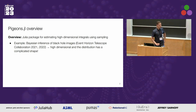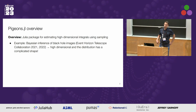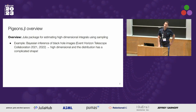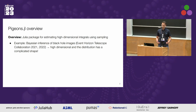Pigeons is a Julia package for estimating high-dimensional integrals using sampling. For instance, Paul Tita, who is here in the audience, has been using the underlying algorithm in Pigeons called parallel tempering to image black holes. When imaging black holes, you obtain a probability distribution on a set of images — that distribution is very high-dimensional and has a complicated structure, and so Pigeons can be useful to solve this kind of problem.